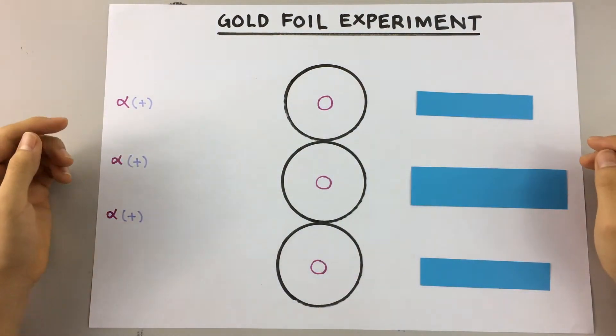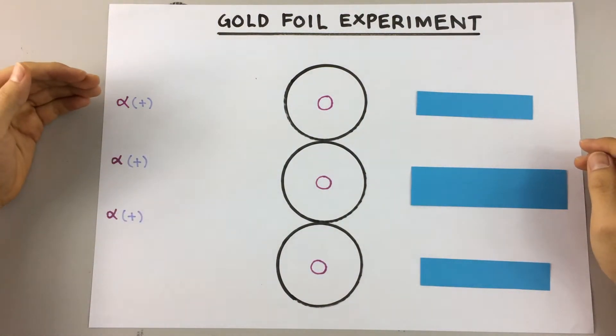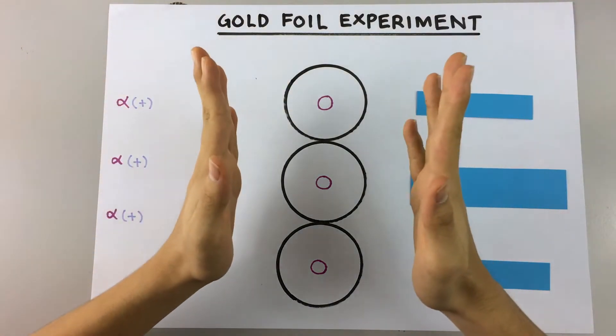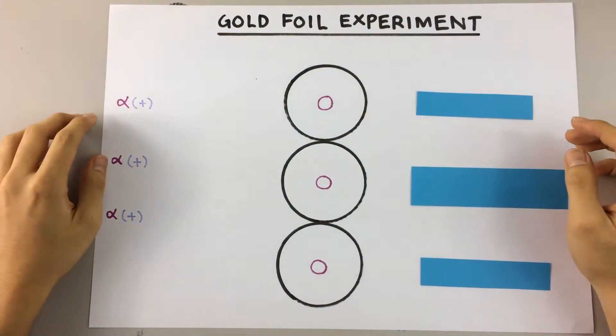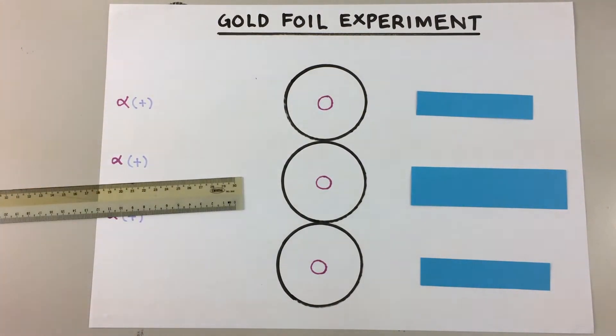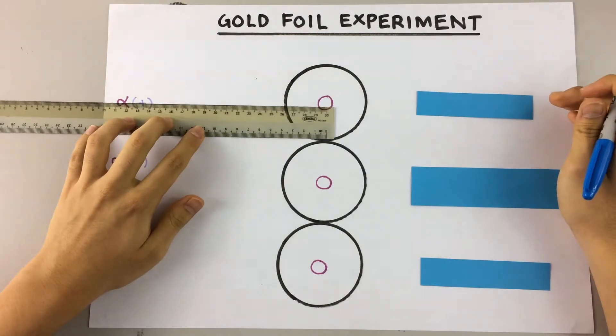So what he did was he had some alpha particles here which are positively charged and he shoots these alpha particles into a gold foil which of course has atoms in it. So we're going to head right into it.